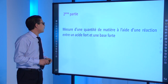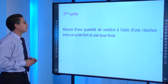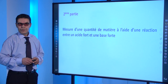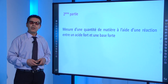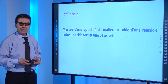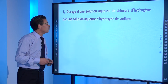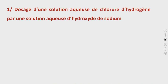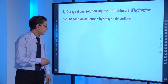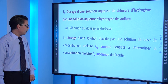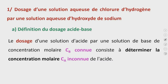Passons maintenant à la deuxième partie. On va procéder à la mesure d'une quantité de matière à l'aide d'une réaction entre un acide fort et une base forte. Pour cela, nous allons nous intéresser à un dosage d'un acide par une solution aqueuse d'hydroxyde de sodium. Tout d'abord, qu'est-ce qu'un dosage acide-base ? Le dosage d'une solution d'acide par une solution de base de concentration molaire Cb connue consiste à déterminer la concentration molaire Ca inconnue de l'acide, ou réciproquement.